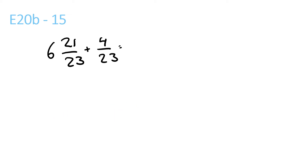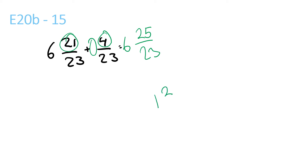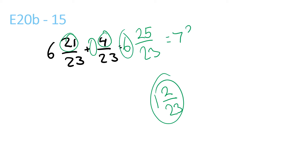6 plus nothing is 6. 21 plus 4 is 25 over 23. 23 goes into 25 once with a remainder of 2 over 23. So 1 and 2 over 23 plus 6 is equal to 7 and 2 over 23.